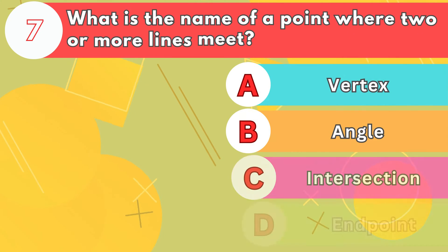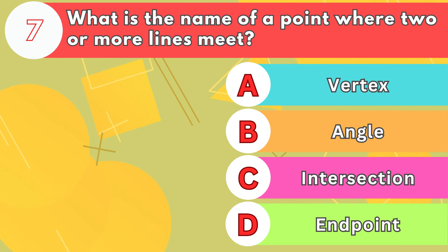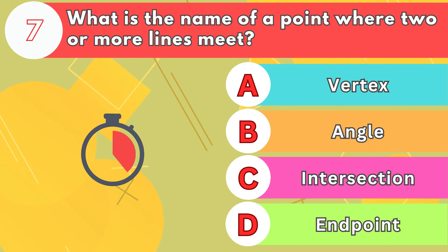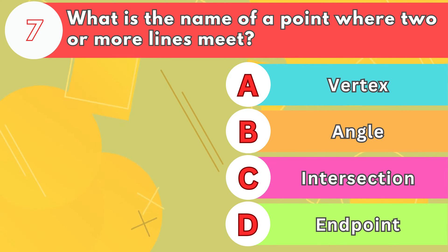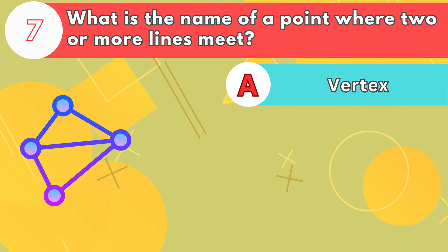Number 7. What is the name of a point where two or more lines meet? The answer is letter A, vertex.